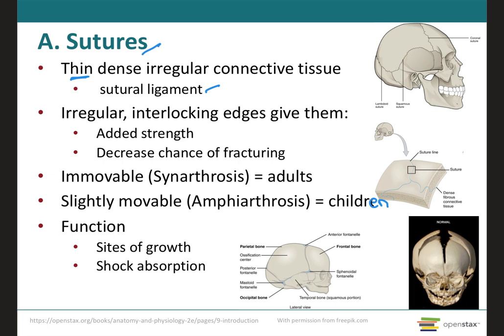It is called a ligament because it connects two bones. Sutures are found only between bones of the skull. An example is the coronal suture, located between the frontal and parietal bones. Notice how between the bones there are irregular interlocking edges that provide added strength and decrease the chance of fracture. Sutures form as the numerous bones of the skull come into contact during development, and they are immovable or slightly movable joints.